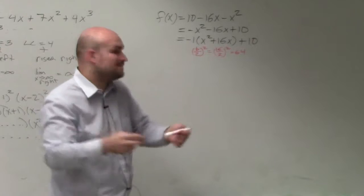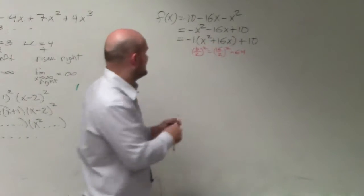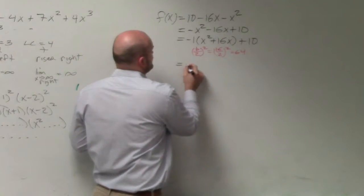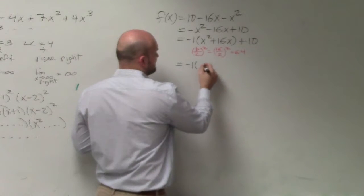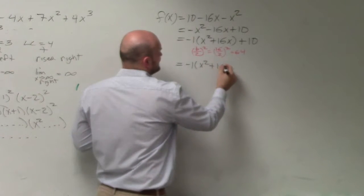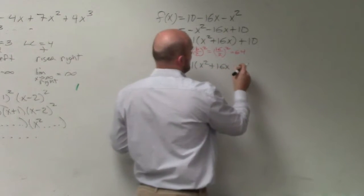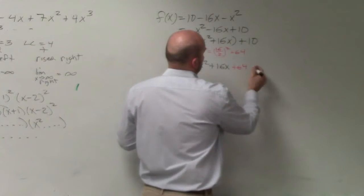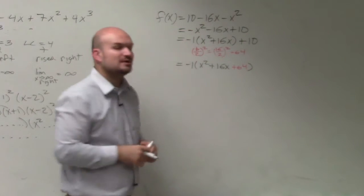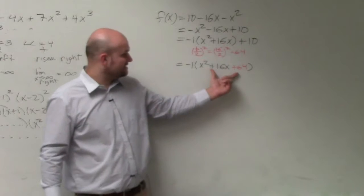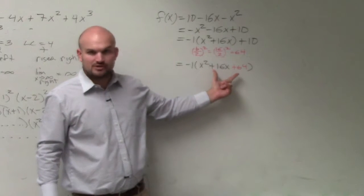So we have to create a perfect square trinomial inside the parentheses. So what I'm going to do is I'm going to take that 64 and I'm going to add it inside the parentheses. Do you guys agree by adding 64 inside the parentheses, this is a perfect square trinomial?